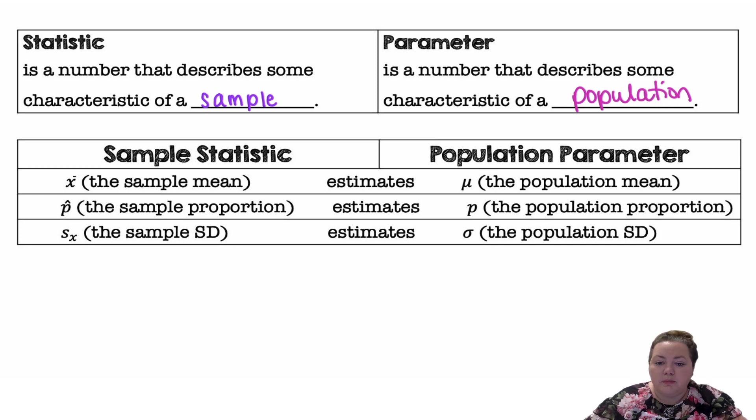For the population parameters, we have μ as the population mean, p the population proportion, and σ the population standard deviation.